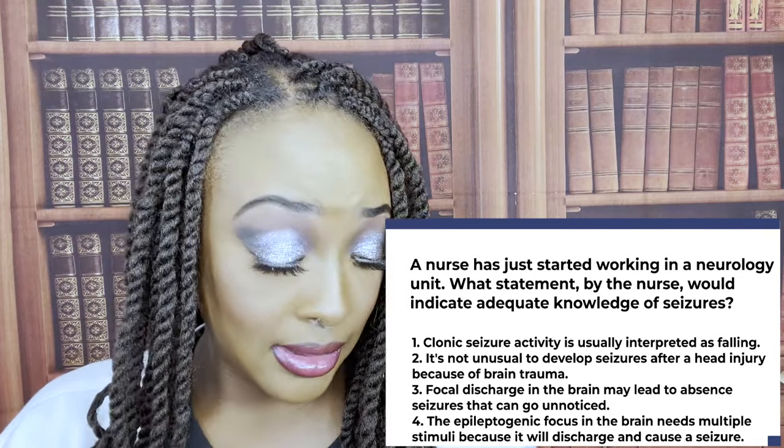A nurse is providing teaching to the parents of a child diagnosed with muscular dystrophy. Which statements are correct? Select all that apply. One — braces and mobility aids will be needed to maintain flexibility of the joints. True, because they're at high risk for contractures. Two — continuous exercise will help your child overcome muscle weakness and prevent the progression of the disease. False — this is a progressive disorder; there is no prevention.